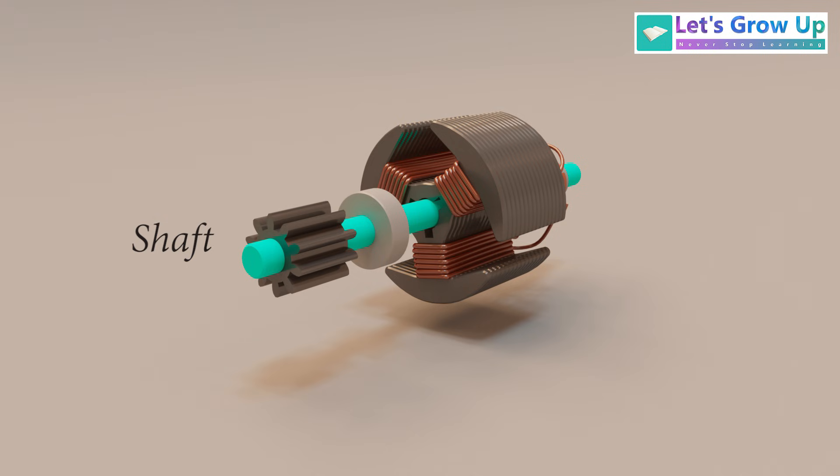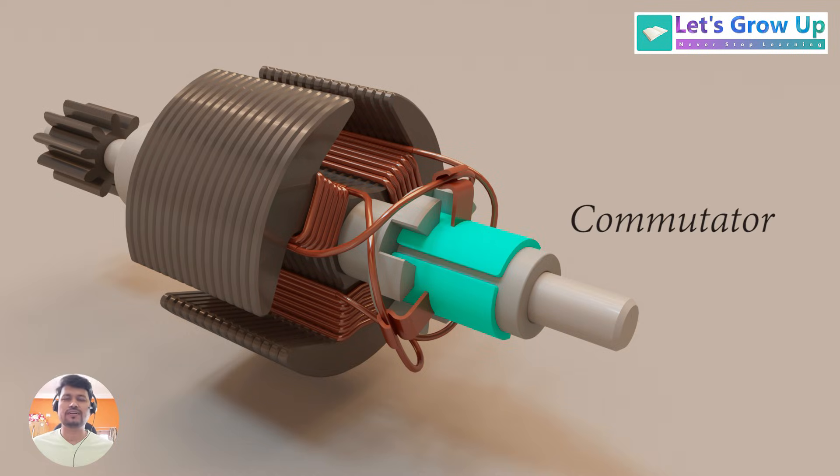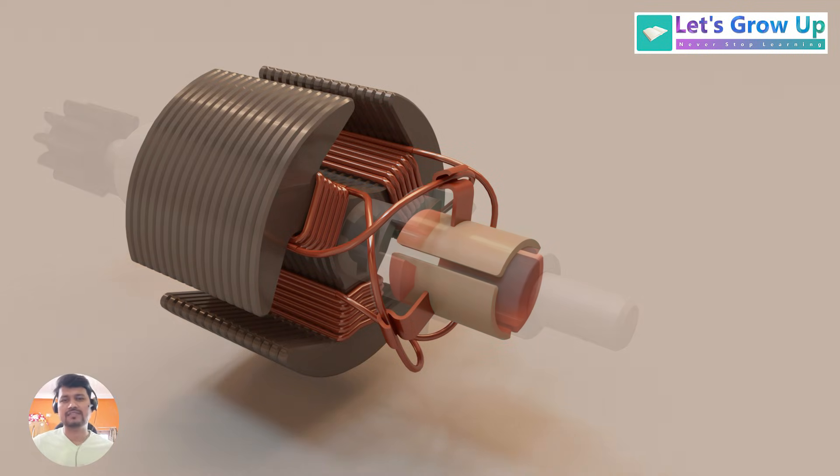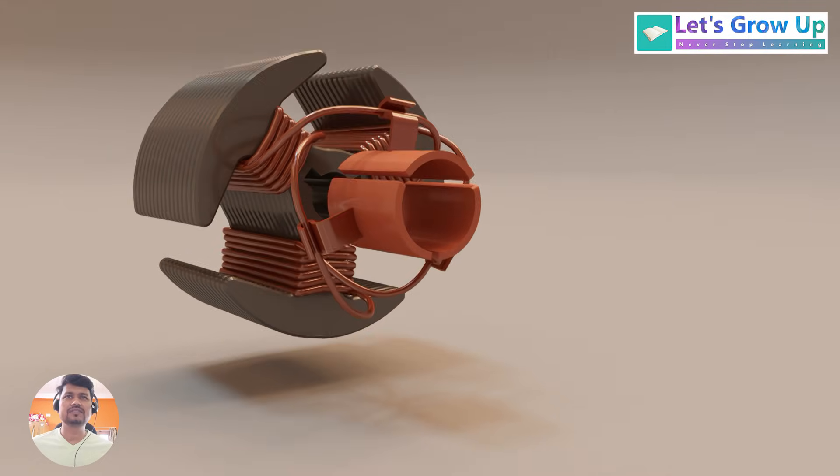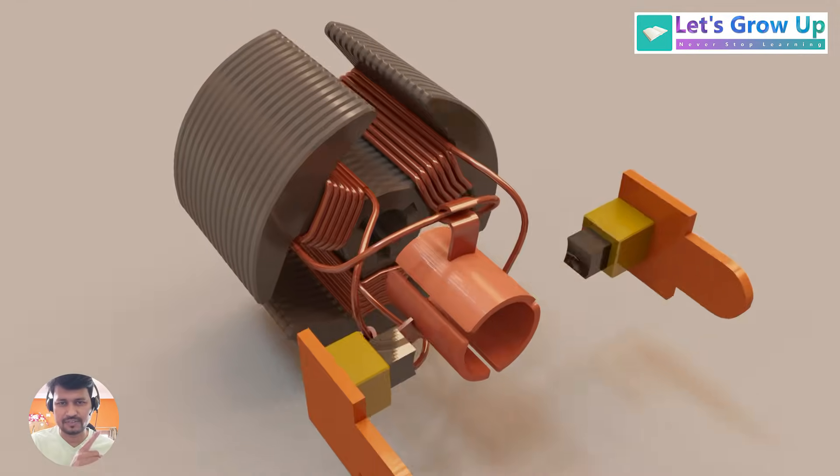This is the shaft. This is a commutator. The commutator is the rotary switch in a brushed DC motor. It's the key to making the motor spin continuously in one direction, and both sides are brushed.